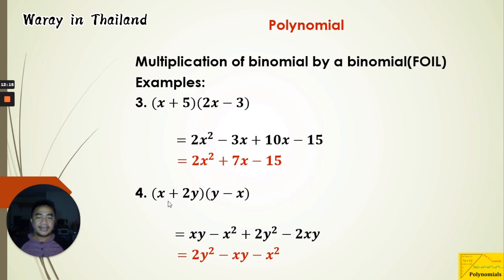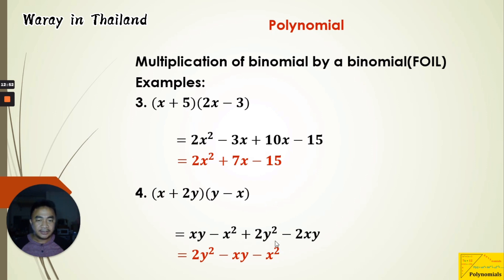Last number: (x + 2y) times (y minus x). Even with all variables, we follow the FOIL method. First: x times y is xy. Outer: x times negative x is negative x². Inner: 2y times y is 2y². Last: 2y times negative x is negative 2xy. Combining like terms: xy and negative 2xy gives negative xy. Therefore, the product of these two binomials is 2y² minus xy minus x². That's all for today — we'll continue more about polynomials tomorrow.